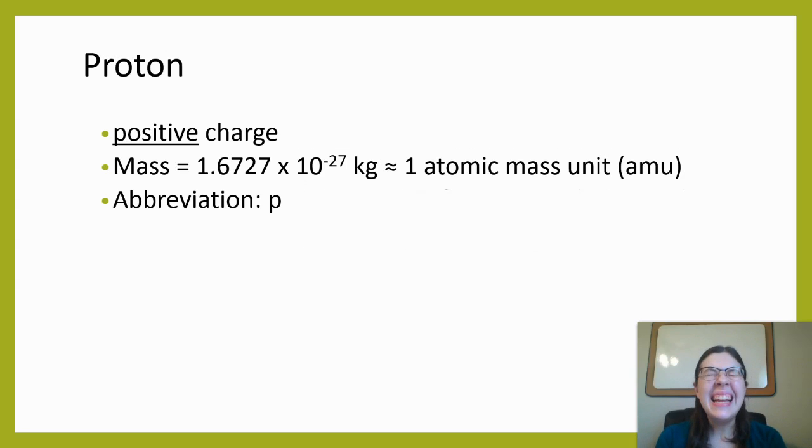The mass of a proton is teeny tiny: 1.67 times 10 to the negative 27. That means that I need to move the decimal point 27 times to the left and add a whole bunch of zeros in front of it. So a really small number in kilograms. And in fact that number is so small it's really a pain to work with, so chemists came up with a different unit called the atomic mass unit.